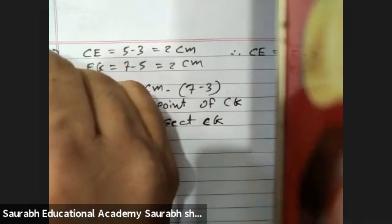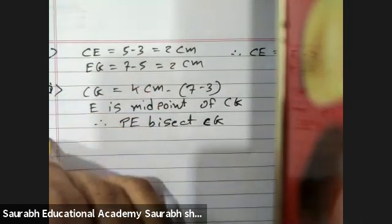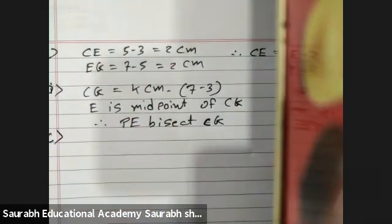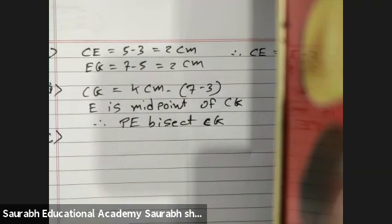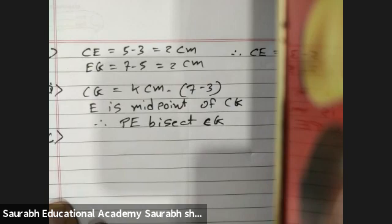Question A, then B, then C. Third question: Identify any two line segments for which PE is the perpendicular bisector.